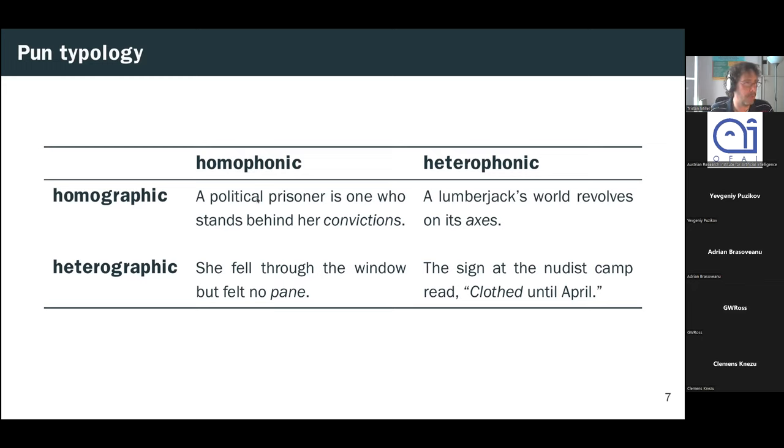So we'll just work through the examples briefly here. So here's a pun, a political prisoner is one who stands behind her convictions. So here we have convictions being used in two senses, either a criminal conviction or a firmly held belief. And the two words here are spelled and pronounced exactly the same.